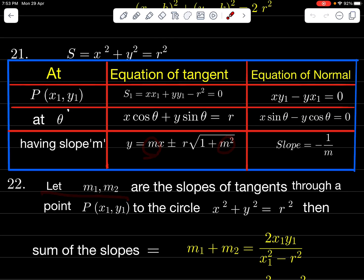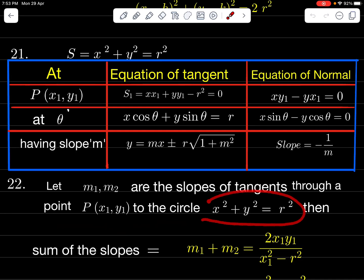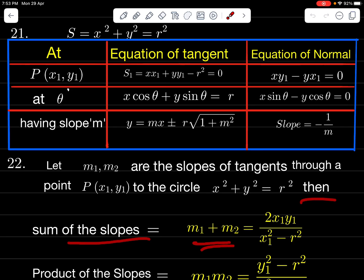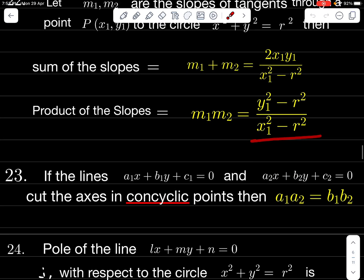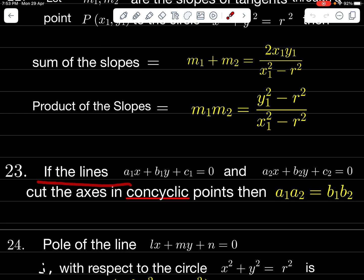Let m₁, m₂ be slopes of tangents from P(x₁, y₁) to x² + y² = r². Then sum of slopes m₁ + m₂ = 2x₁y₁ / (x₁² − r²), and product of slopes m₁m₂ = (y₁² − r²) / (x₁² − r²). If lines a₁x + b₁y + c₁ = 0 and a₂x + b₂y + c₂ = 0 cut the axes in concyclic points, then a₁a₂ = b₁b₂.